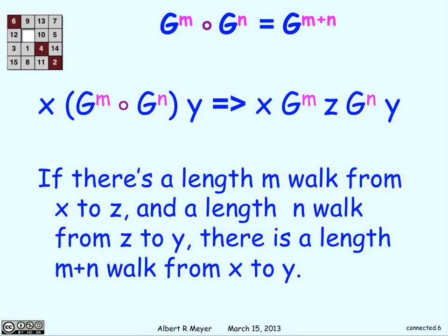And why this is the same thing as g^(m+n) makes sense. If there's a path length m to z and a path length n from there to y, you just go from x to z in m steps, then z to y in n steps, and you have m plus n steps from x to y.